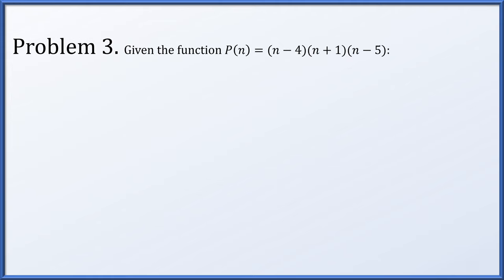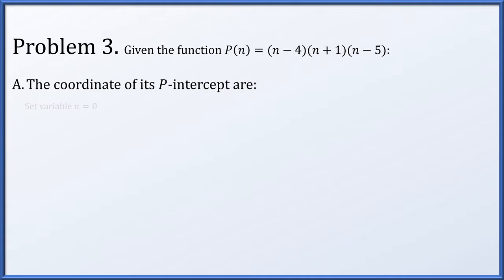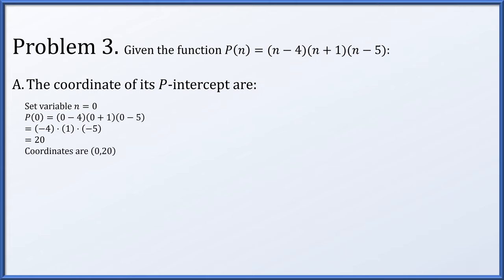Problem three. Given the function p(n) = (n minus 4)(n plus 1)(n minus 5), what are the coordinates of its p-intercept? For the p-intercept, we set the domain variable n to 0 and compute (0 minus 4)(0 plus 1)(0 minus 5), or negative 4 times 1 times negative 5, which gives 20. So the coordinates are (0, 20).